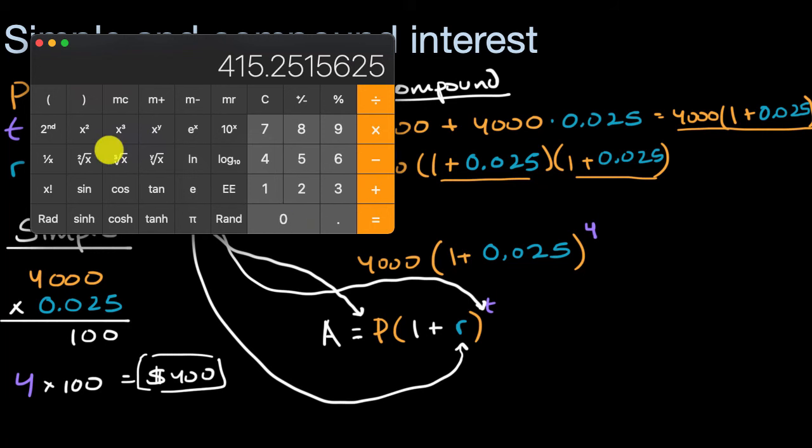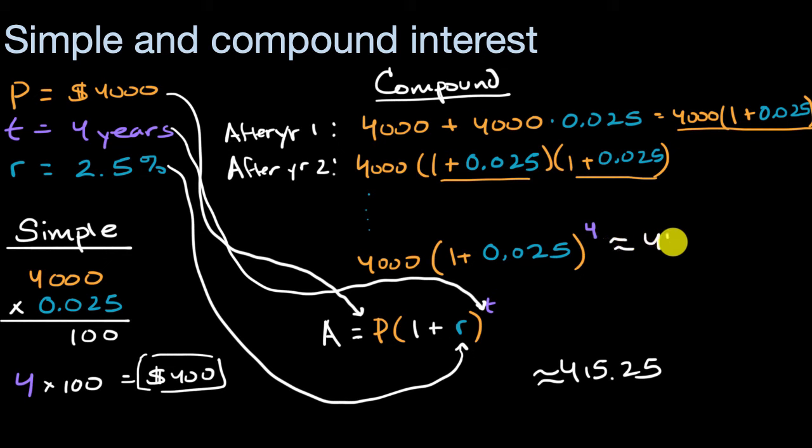I didn't write it here because this would be approximately $4,415.25. But the amount that we earned in interest is this right over here. And so you can see in this scenario, compounding got us a little bit more than an extra $15.